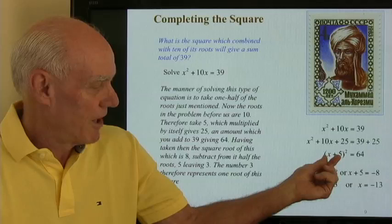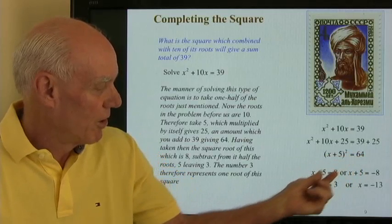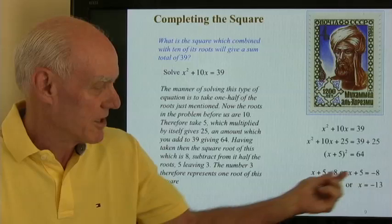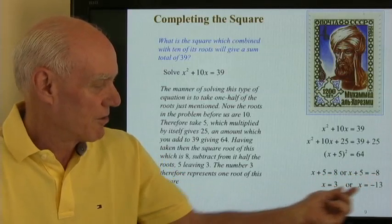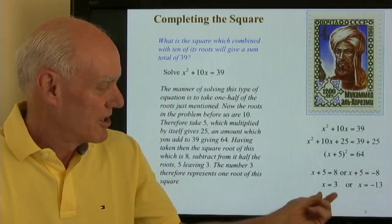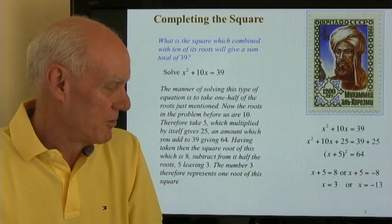That means that x plus 5 squared equals 64 implies that x plus 5 is 8 or x plus 5 is negative 8. So we get 3 or negative 13. So Al-Kharizmi is talking about this root right here, 3.